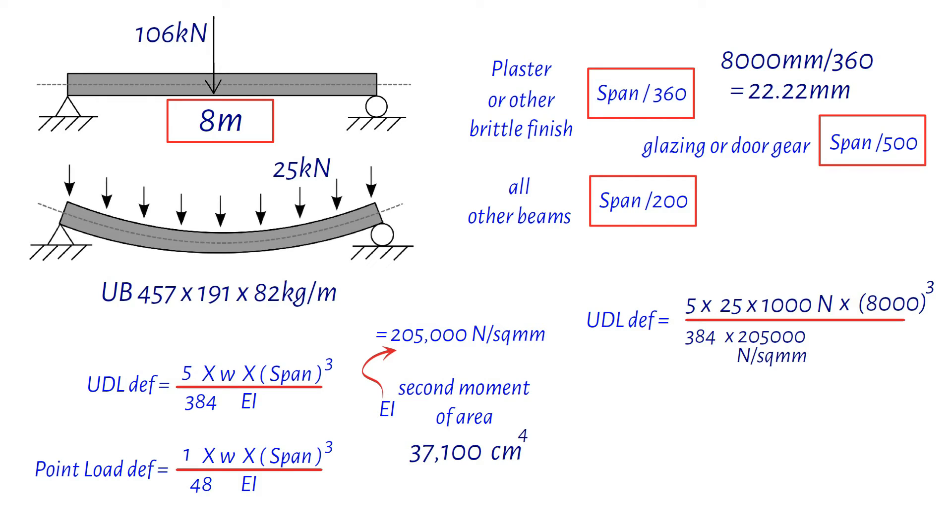For the moment of inertia, which is 37,100 centimeters to the power of 4, don't forget to multiply it by 10 to the power of 4 to convert it to millimeters to the power of 4. And what do we get? A deflection of 2.19 millimeters.